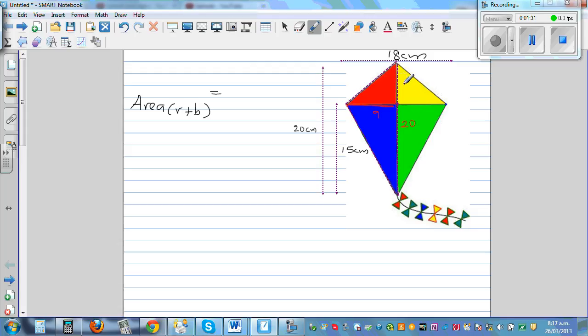Your base is 20. I like to write the formula like this: base times height. Your height is 9 divided by 2.